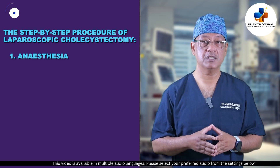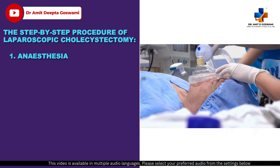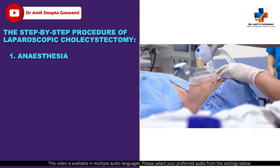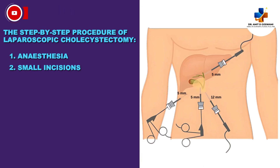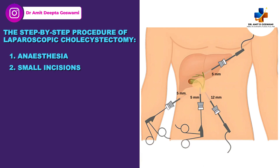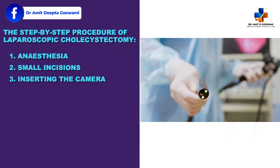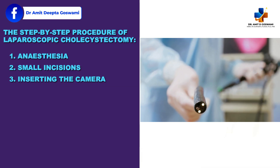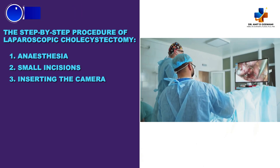Regarding the anesthesia — you will be given general anesthesia, so you will be asleep and pain-free throughout the procedure. There will be four tiny incisions: three will be around five millimeters and one will be around half an inch, that is 12 millimeters. A laparoscope — a tiny camera — is inserted through one incision to give the surgeon a clear view of the gallbladder on a monitor.